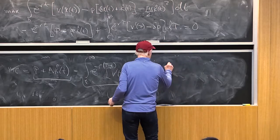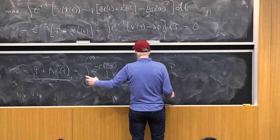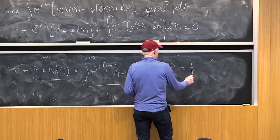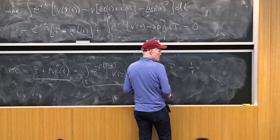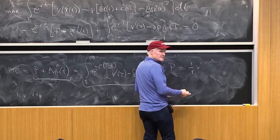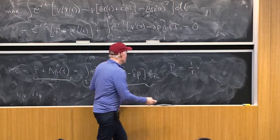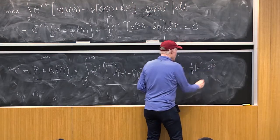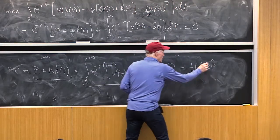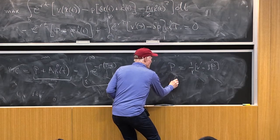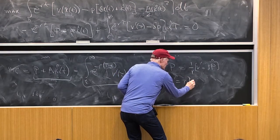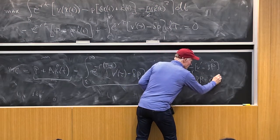So we're going to get p on the left hand side equals 1 over r times v prime, and that's just a steady state v prime, minus delta p. So v prime equals r p plus delta p, which equals r plus delta times p.